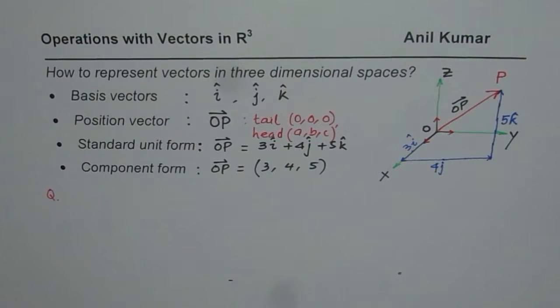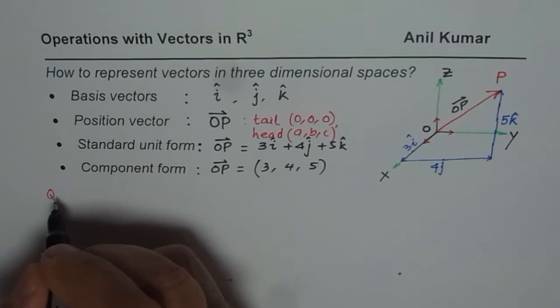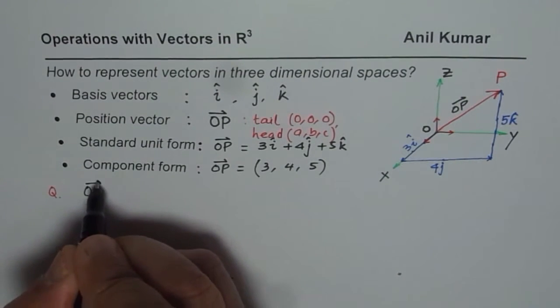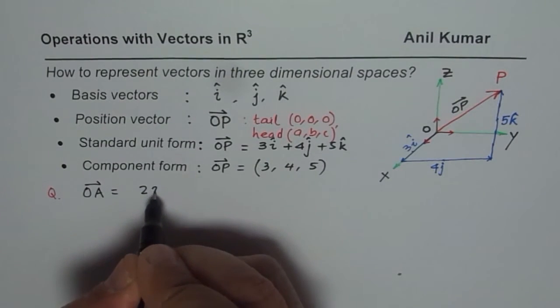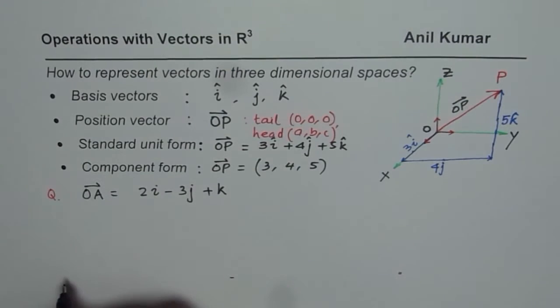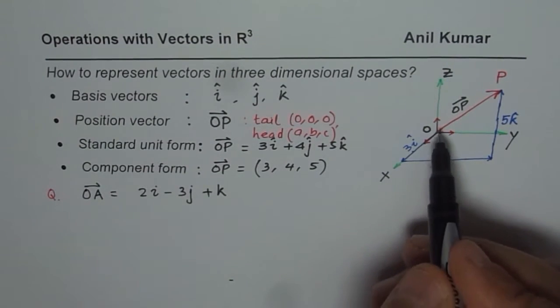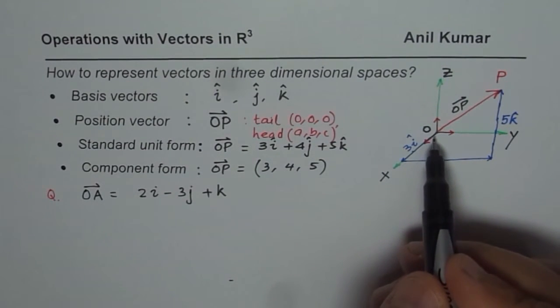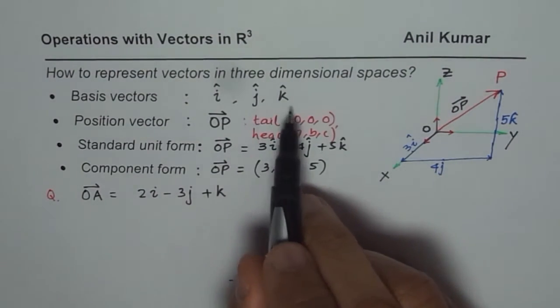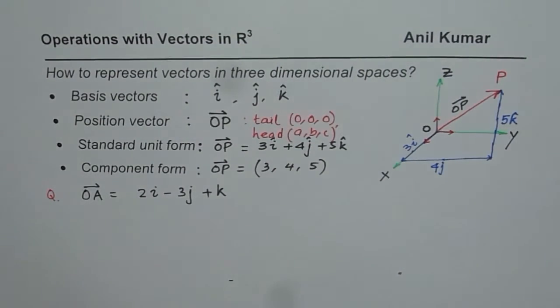Let me give you a few questions. Let's say you practice finding the vector and placing it on three space. Vector OA is 2i minus 3j plus k. How will you sketch vector OA using i, j, k as your basis vector?